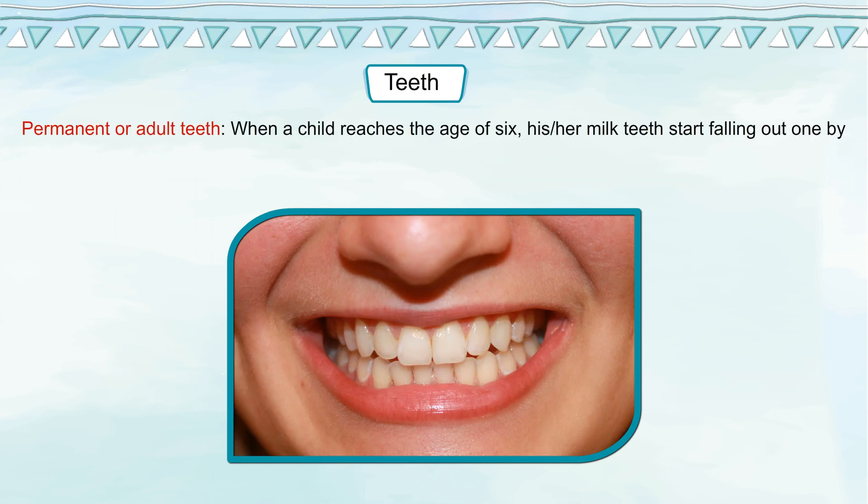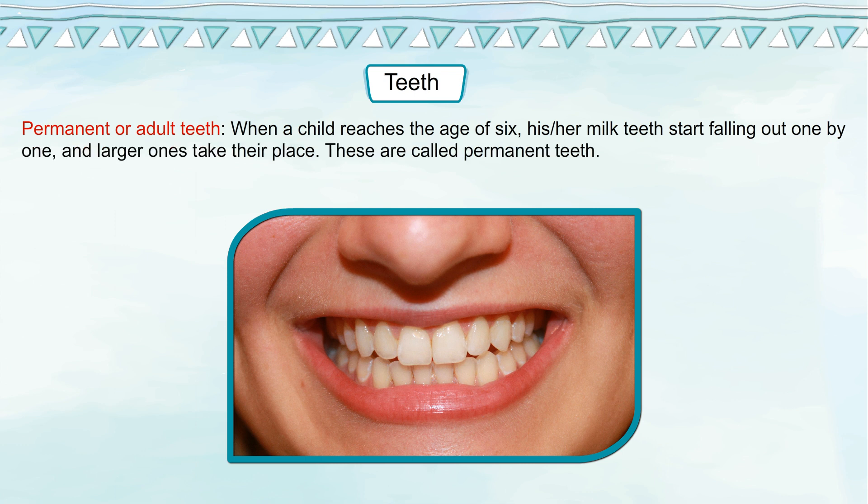Permanent or adult teeth: when a child reaches the age of 6, his or her milk teeth start falling out one by one and larger ones take their place. These are called permanent teeth.